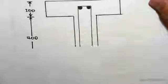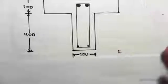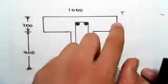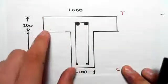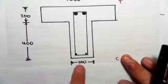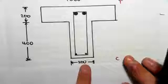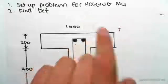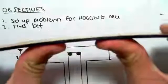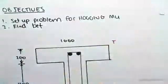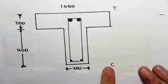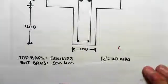This is our profile — we have a T-beam. It's 1000mm wide, 200mm deep at the flange, 400mm deep at the web, and 200mm deep at the web here. Because it's hogging, it's going to pop up like that, so the top is going to be in tension and the bottom is going to be in compression.